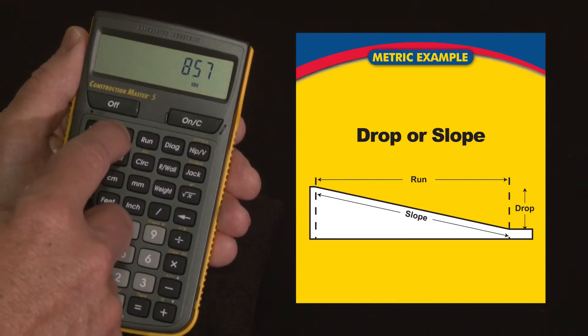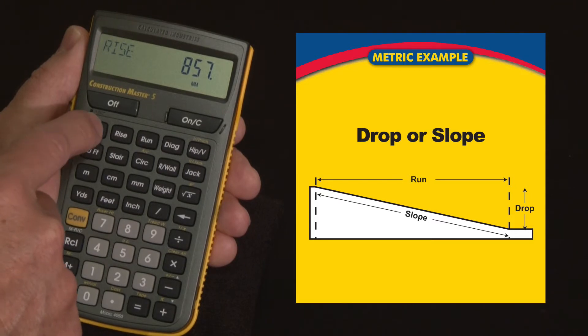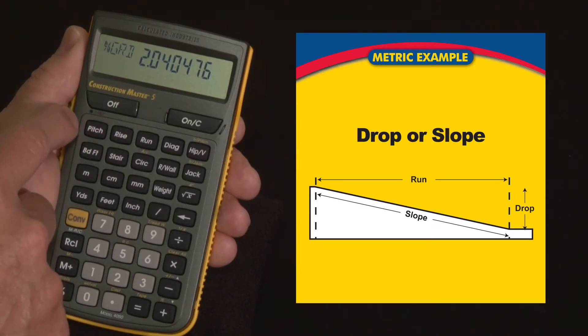So enter that as the rise and then just press the pitch key here, I'm going to press it a couple of times to get to the degrees, 1.17 degrees, and it's about a 2% grade, and you might think that works just fine.